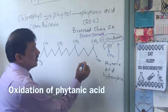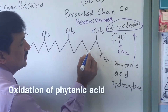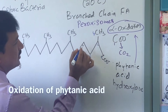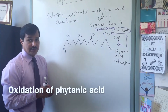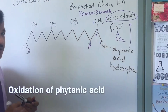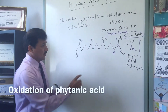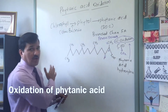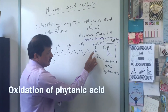Now the numbering changes: the former second carbon becomes the new first carbon (carboxyl group), the old third carbon is now second (alpha carbon), and the old fourth is now third (beta carbon). So now you can conduct beta oxidation because there is no hindrance at the beta carbon. Now the four reactions of beta oxidation can act on the beta carbon.